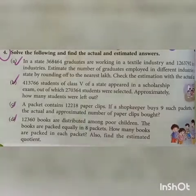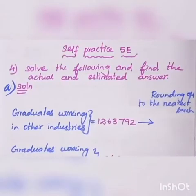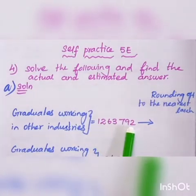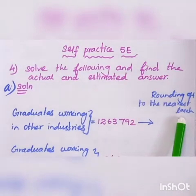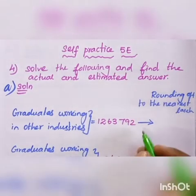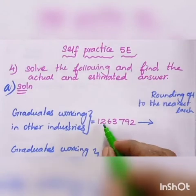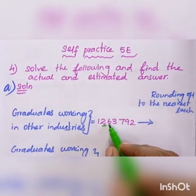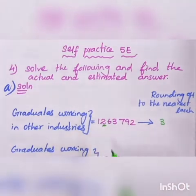Here are the three problems. Look at the first sum. The problem is about graduates working in other industries — how many graduates are working in other industries? The number is 12,63,792. This is rounded to the nearest lakh place. Rounding off to the nearest lakh: the lakh digit is 2, the next digit is 6, which is the greatest. So 2 plus 1 is 3.